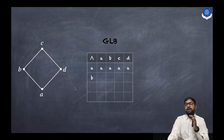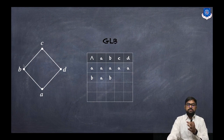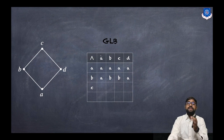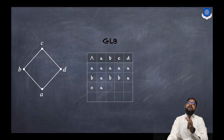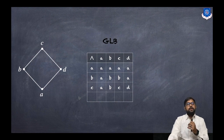GLB of b and a is a. GLB of b and b is b. GLB of b and c is b. GLB of b and d is a. Then c and a is a, c and b is b, c and c is c, and c and d is d.